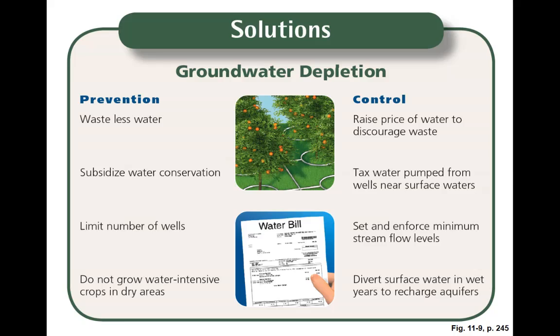We have desalination that they're looking at as a potential option to provide more fresh water, but as of right now there are still downsides — it's still expensive and we still have to deal with the brine that's produced. We need to tax water pumped from wells near surface waters, because those surface waters are seeping into those wells and replenishing them — people are taking that water before it has a chance to get into the main aquifer. We need to set and enforce minimum stream flow levels so we won't over-pump from a particular stream, making it more sustainable.